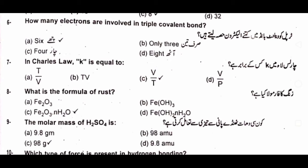The answer is C) V upon T. Question number eight: what is the formula of rust? A) Fe₂O₃, B) FeO₃, C) Fe₂O₃·H₂O, D) FeO·H₂O. The answer is C) Fe₂O₃·H₂O.